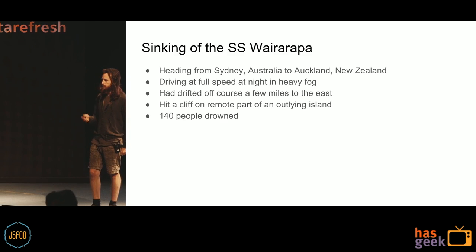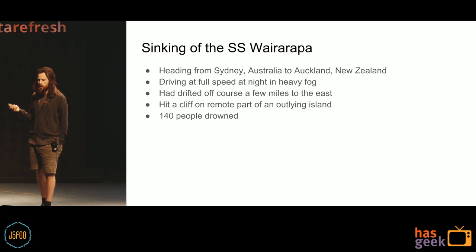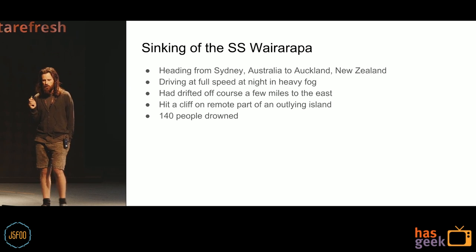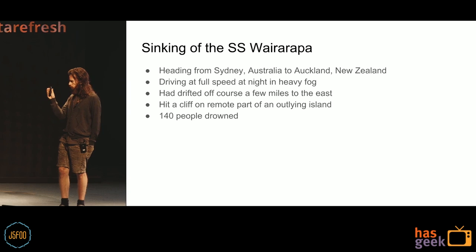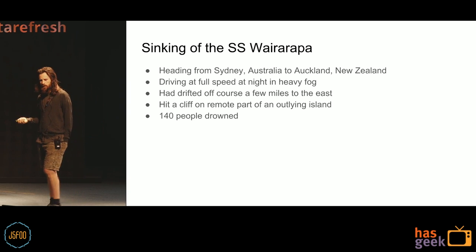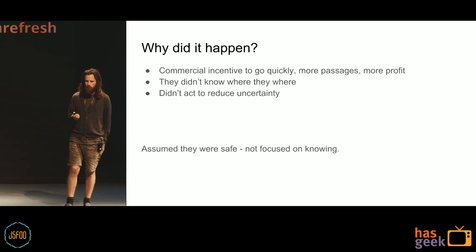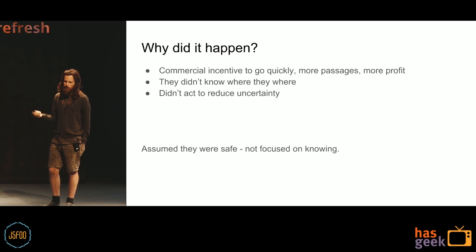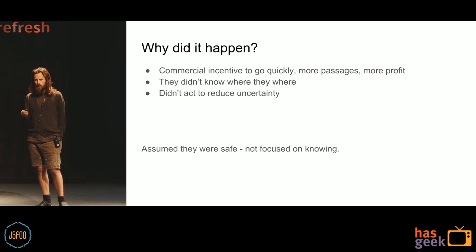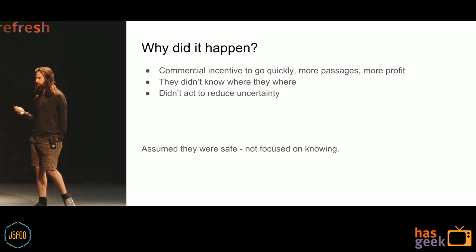Here's an example of not using navigation-driven shipping: the sinking of the SSY Wairarapa. They were heading from Sydney, Australia to Auckland, New Zealand — about 2,000 miles — and had about 100 miles to go. They were driving at full speed at night in heavy fog, drifted off course a few miles, and crashed into a cliff. 140 people died in one of the worst maritime disasters in New Zealand. They had a commercial incentive to go quickly, but they didn't know exactly where they were, didn't act to reduce uncertainty, and just assumed they were safe — not focused on knowing.